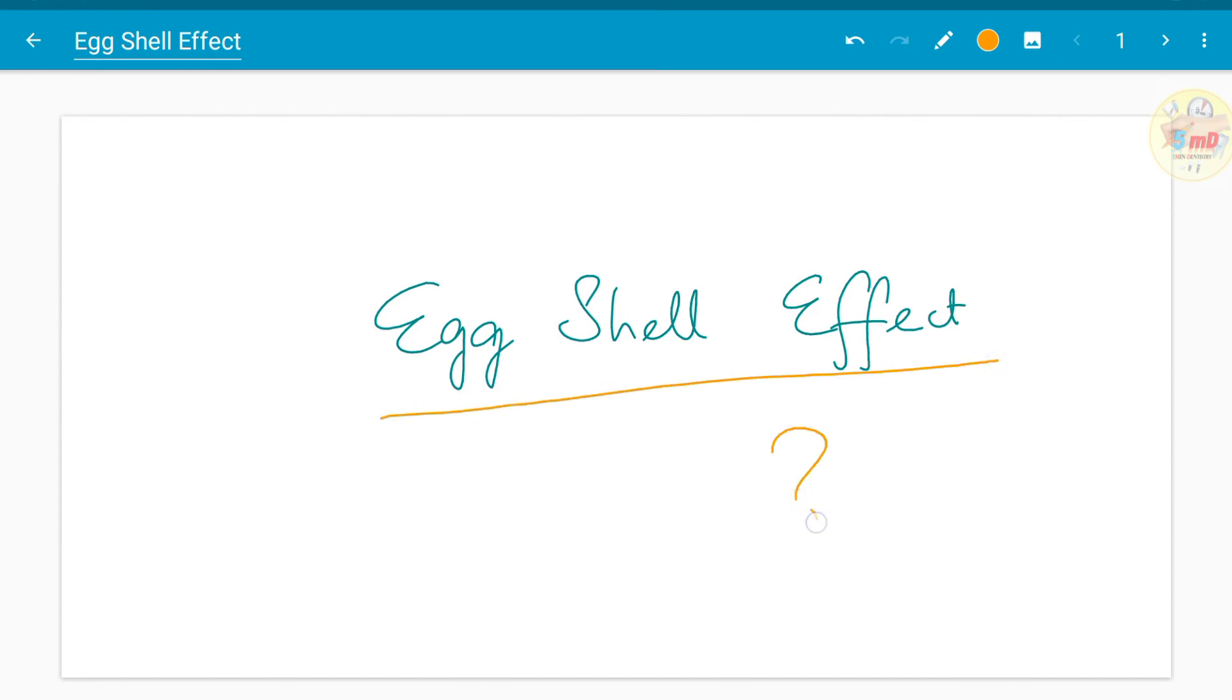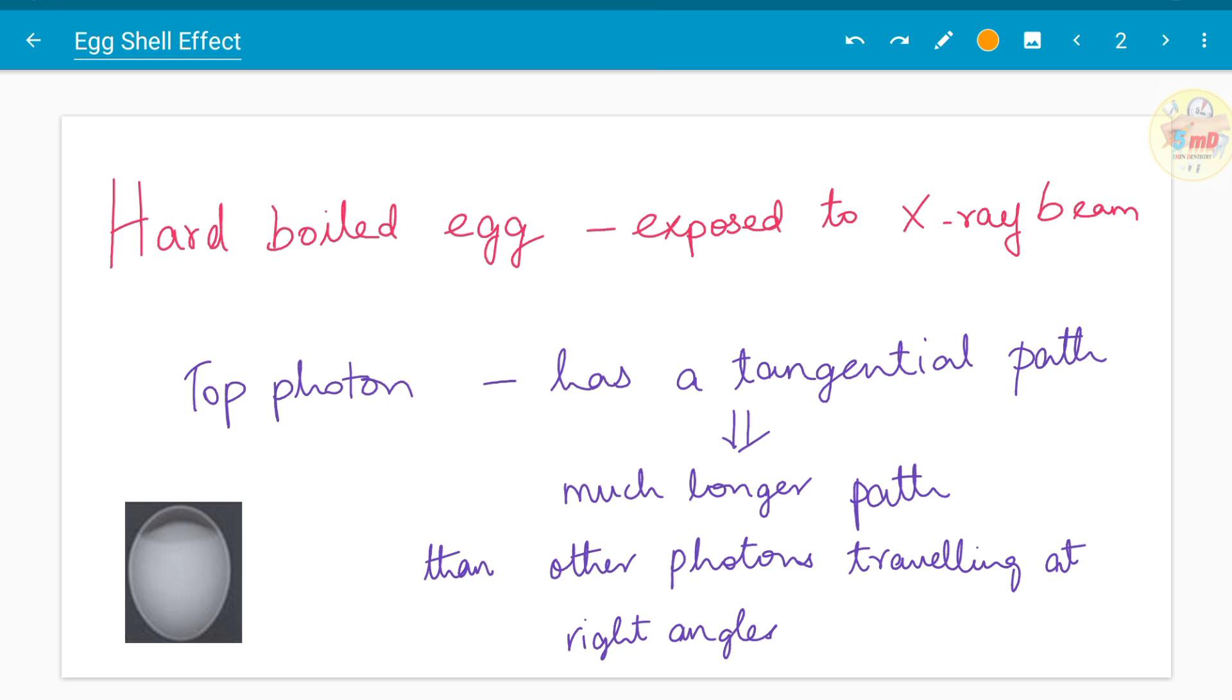What is eggshell effect in oral radiology and how did this term come into origin? For example, if you take a radiograph of a hard-boiled egg when it is exposed to an x-ray beam.